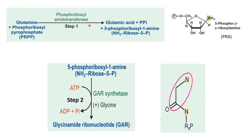The enzyme catalyzing this reaction is glutamine PRPP amidotransferase, which is not present in brain or RBCs — that is why they solely depend on the salvage pathway for purine nucleotide biosynthesis. This step is both a committed and rate-limiting step. 'Committed' means that once PRPP undergoes this reaction, it must follow the purine biosynthesis pathway. This enzyme is under feedback regulation.